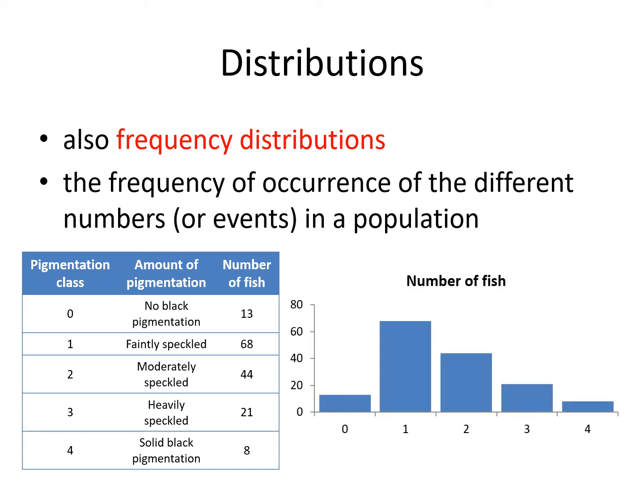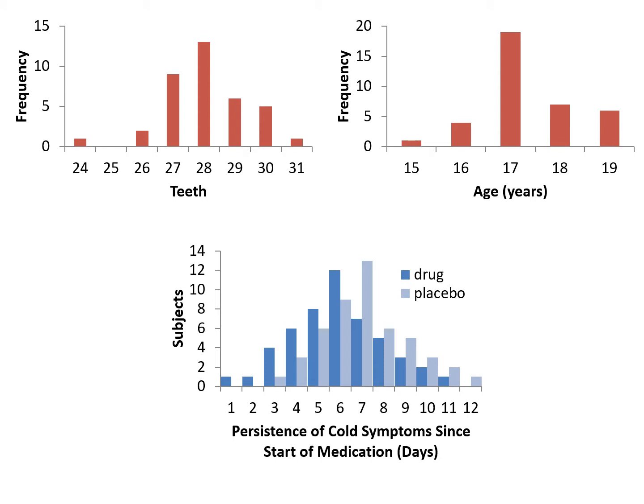Here it is represented in a bar graph. You may remember in the lecture on data presentation, frequency distributions are represented in columns or bars. In the upper left, you will see the frequency of individuals with certain numbers of teeth. On the upper right, you will see a frequency of certain ages from 15 to 19 years. The graph below, with clustered blue and light blue bars, shows the number of individuals whose cold symptoms have persisted under two treatment regimes.